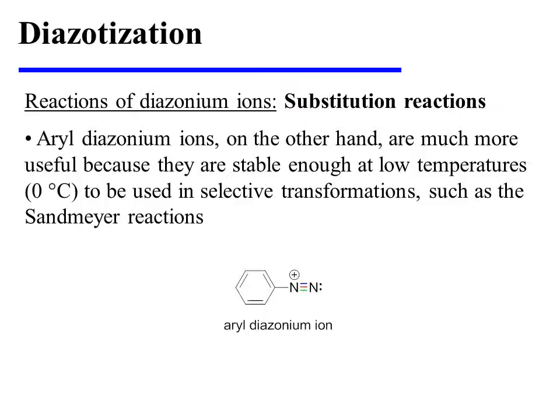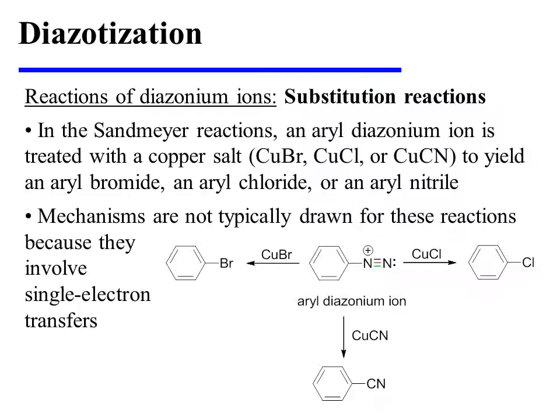Aryl diazonium ions, on the other hand, are much more useful because they are stable enough at low temperatures to be used in selective transformations, such as the Sandmeyer reactions. In the Sandmeyer reactions, an aryl diazonium ion is treated with a copper salt — namely copper bromide, copper chloride, or copper cyanide — to yield an aryl bromide, an aryl chloride, or an aryl nitrile.